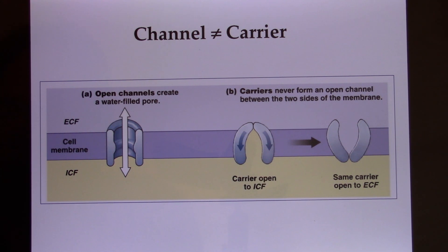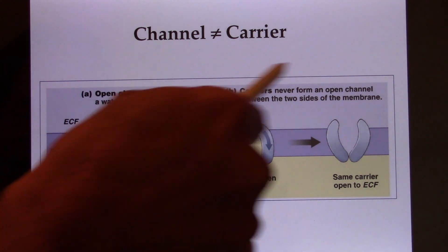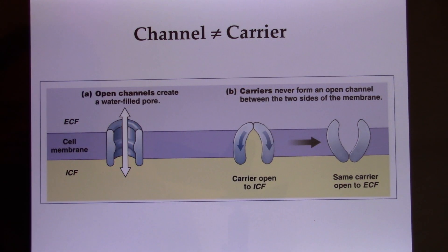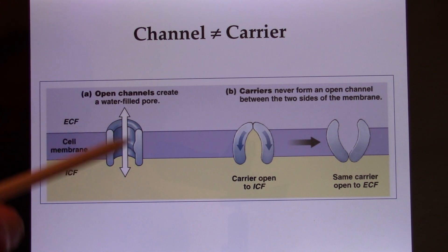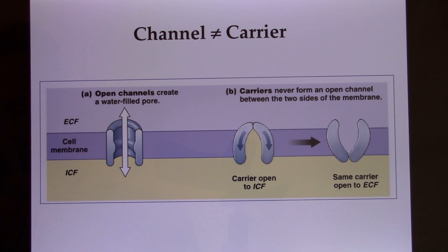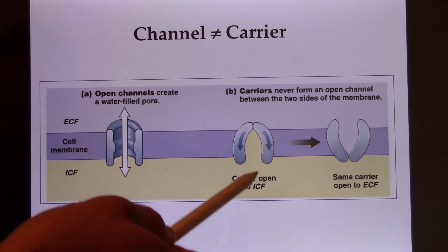Now let's look at membrane proteins. Some molecules cannot use simple diffusion through the cell membrane — they need facilitated diffusion. We can use ion channels or carriers; these two are structurally different. Ion channels provide a direct opening between the two sides of the membrane. You can't make this hole too big because it can damage the cell, so for bigger molecules, carriers are used — carriers don't have a direct connection.